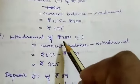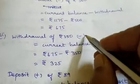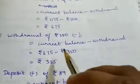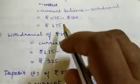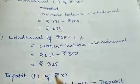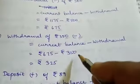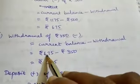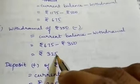Withdrawal of Rs. 350. Current balance minus withdrawal: last balance was 675 minus 350 equals Rs. 325.